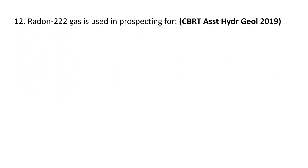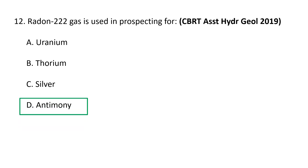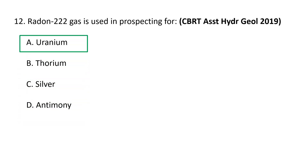Next question: Radon-222 gas is used in prospecting for — A) Uranium, B) Thorium, C) Silver, and D) Antimony. Radon is used for prospecting uranium. Radon has proven useful in exploring not only for uranium but for other associated elements as well. It has also been used successfully in exploring geothermal sources, earthquake prediction, and many other applications. A, uranium, is the correct answer.